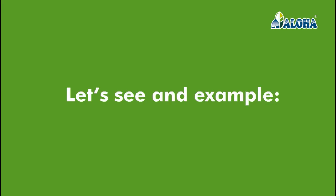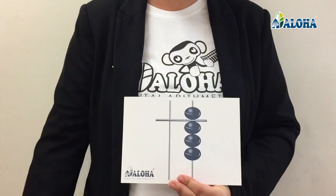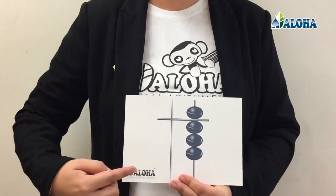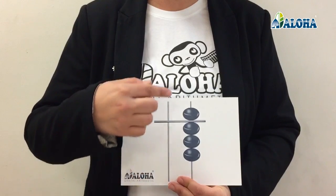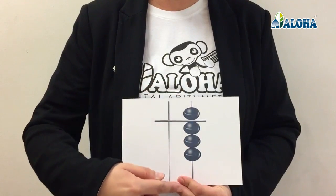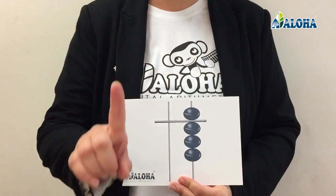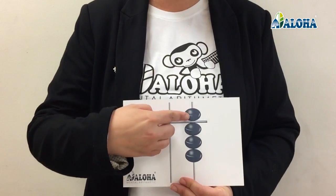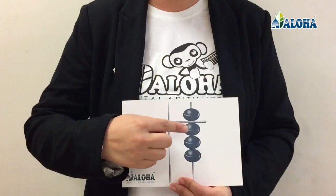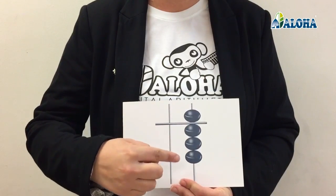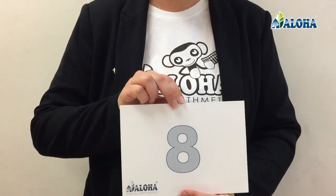Let's see an example. In order to find out the concerned number, we must observe the card and identify what number is shown on the basis of the displayed bits and columns. For instance, in this example, we can observe that in the units column there is an upper bit worth 5 and 3 lower bits that are worth 1 each. Thus the correct answer is 8.